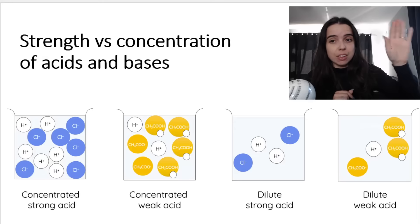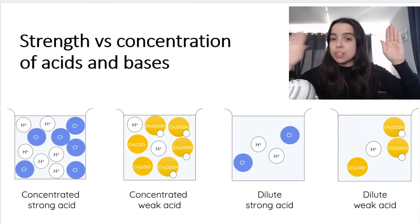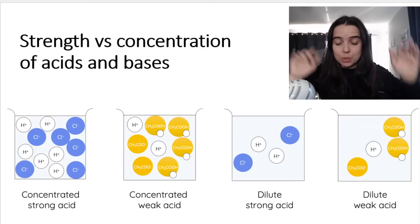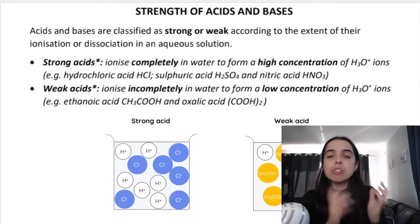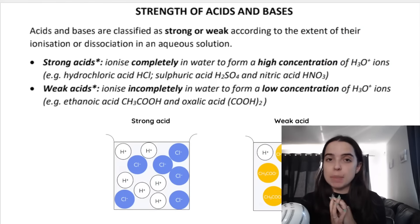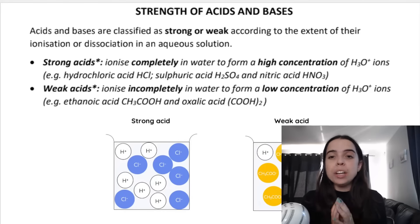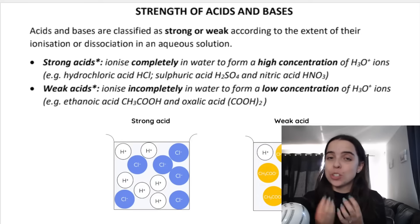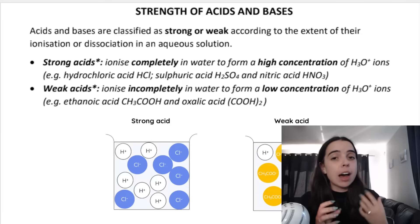Strength — strong versus weak — is very different to concentrated versus dilute. Starting off with strength: the strength of an acid or base. Acids and bases can be classified as strong or weak according to the extent to which they ionize or dissociate in an aqueous solution.